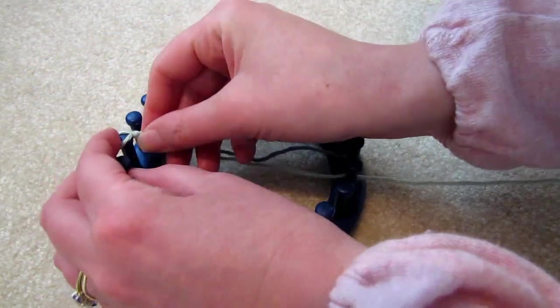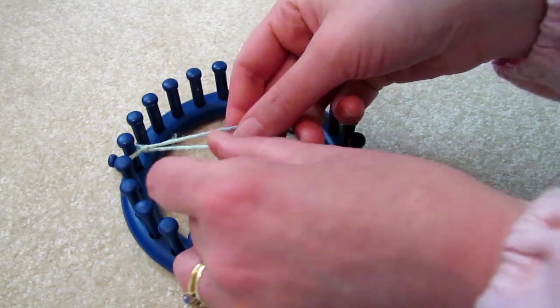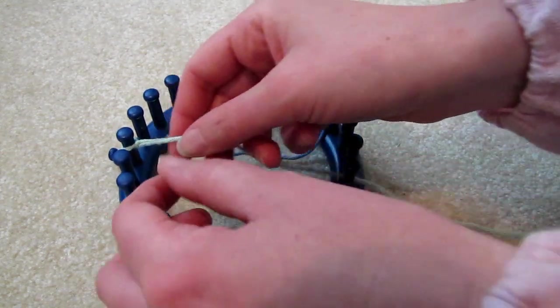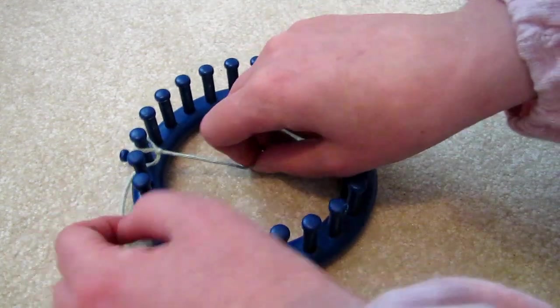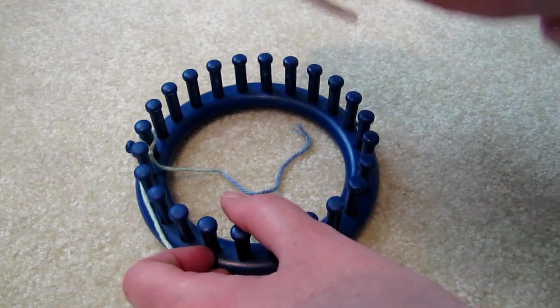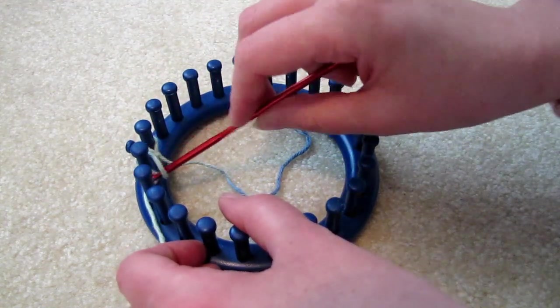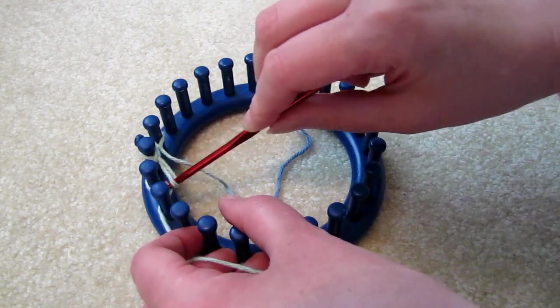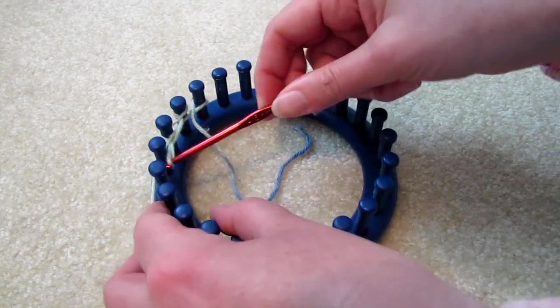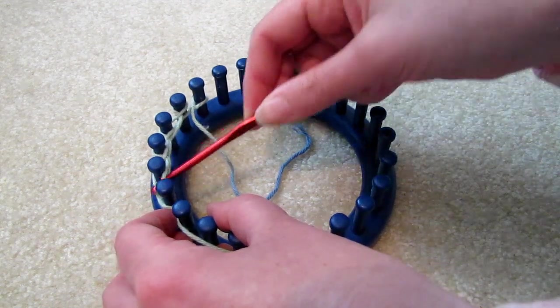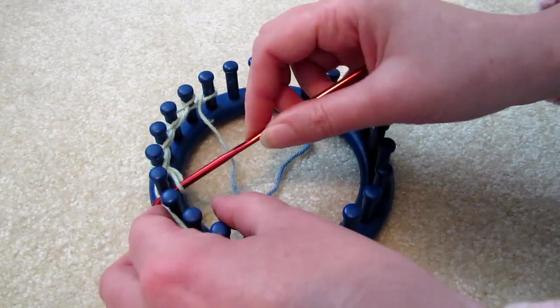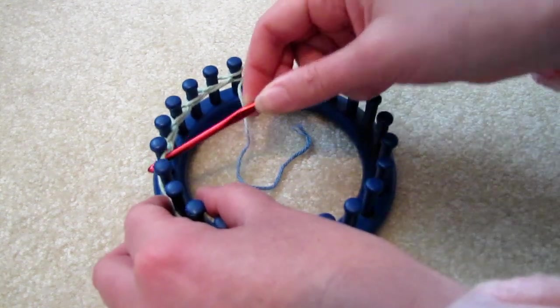We'll cast on using the chain method. So we'll place a slip knot over the first peg, insert the crochet hook between the first and second, and then grab each loop. Remember there is another tutorial that explains this method if this goes too fast for you.